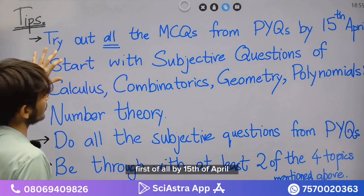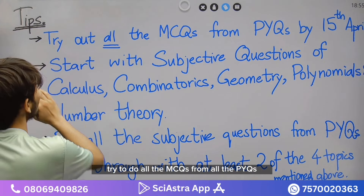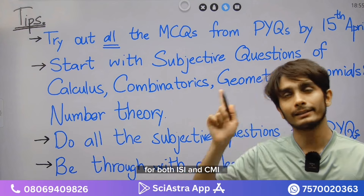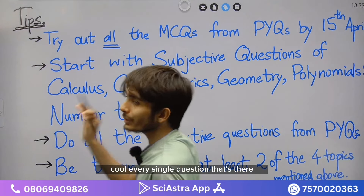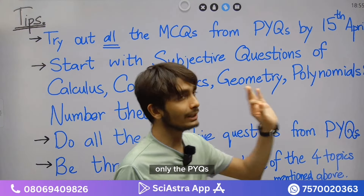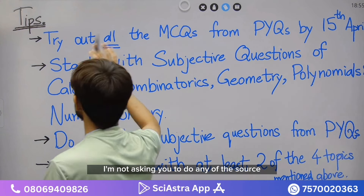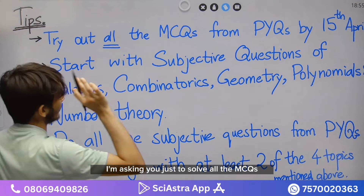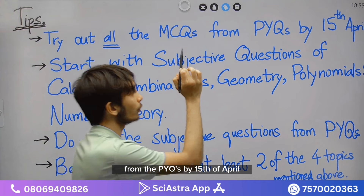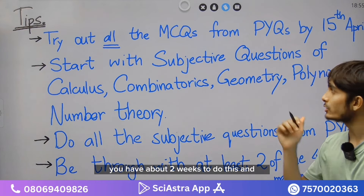First of all, by the 15th of April, try to do all the MCQs from all the PYQs for both ISI and CMI — every single question that's available to you, only the PYQs. I am not asking you to do the Tomato Book or any other source. I am asking you just to solve all the MCQs from the PYQs by 15th of April. You have about two weeks to do this.